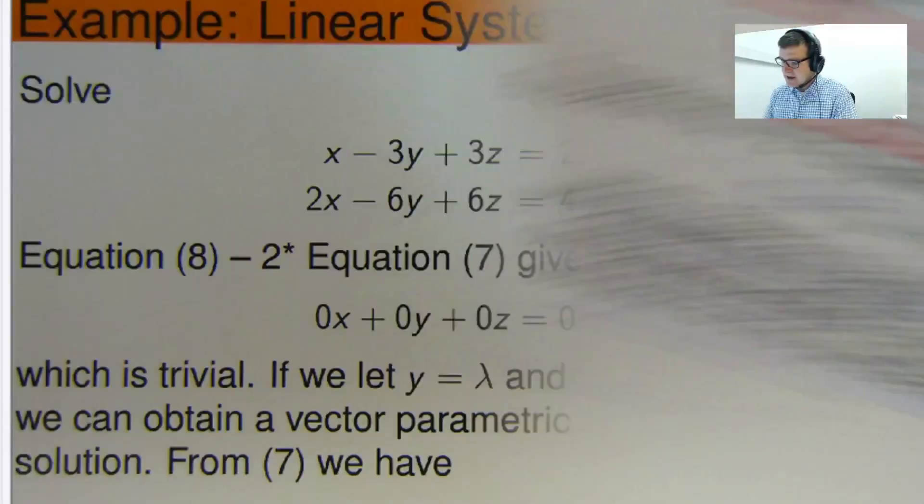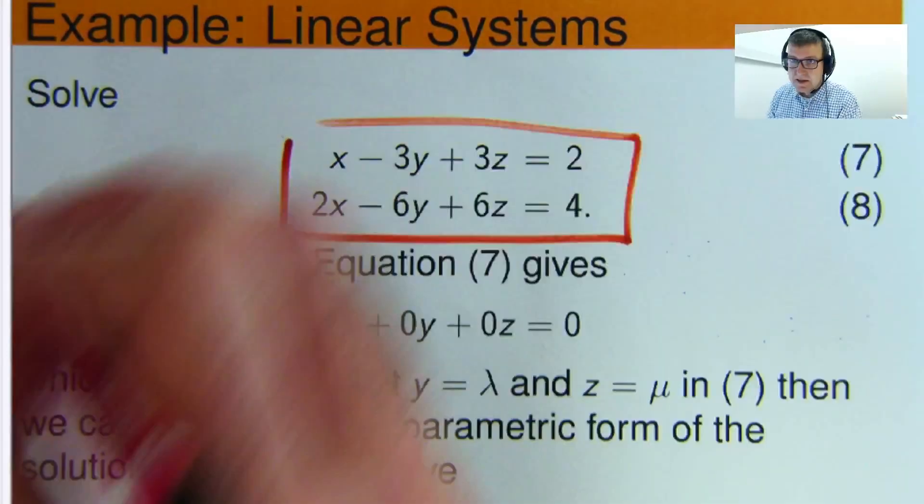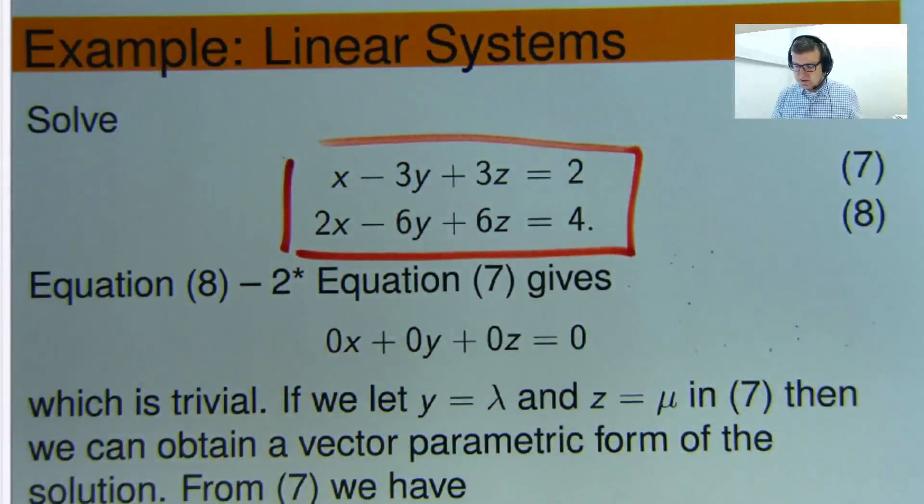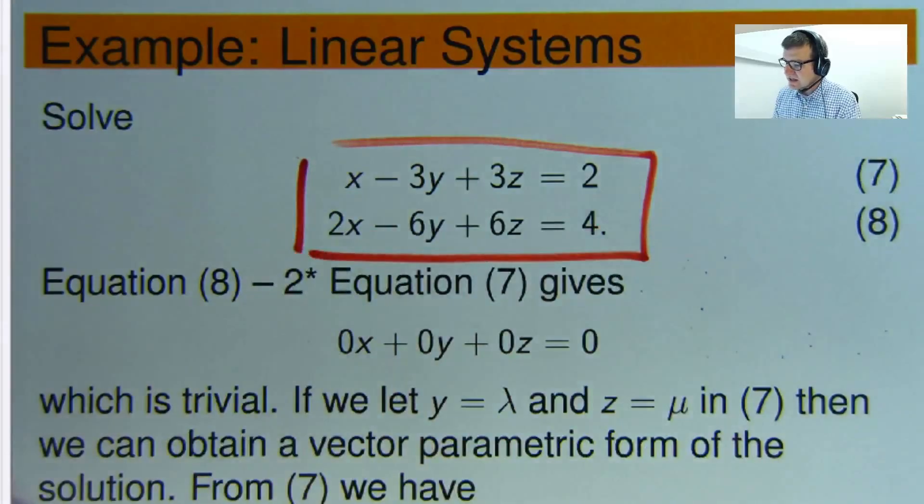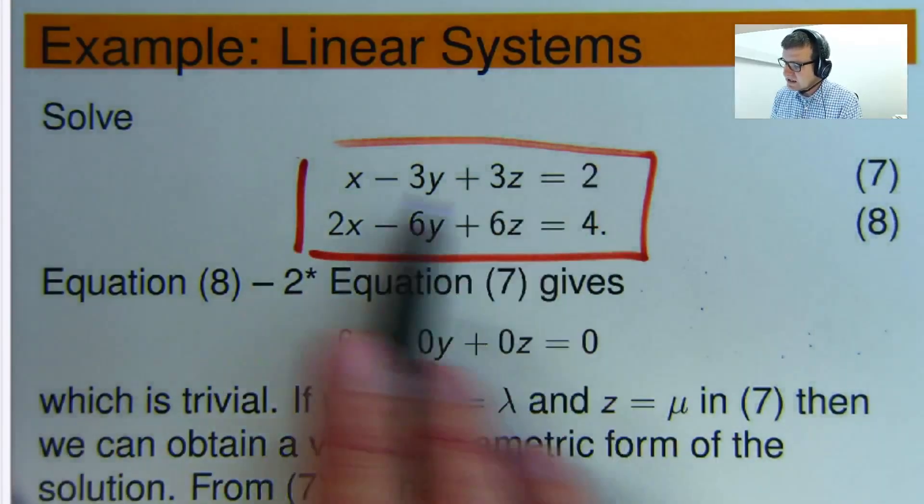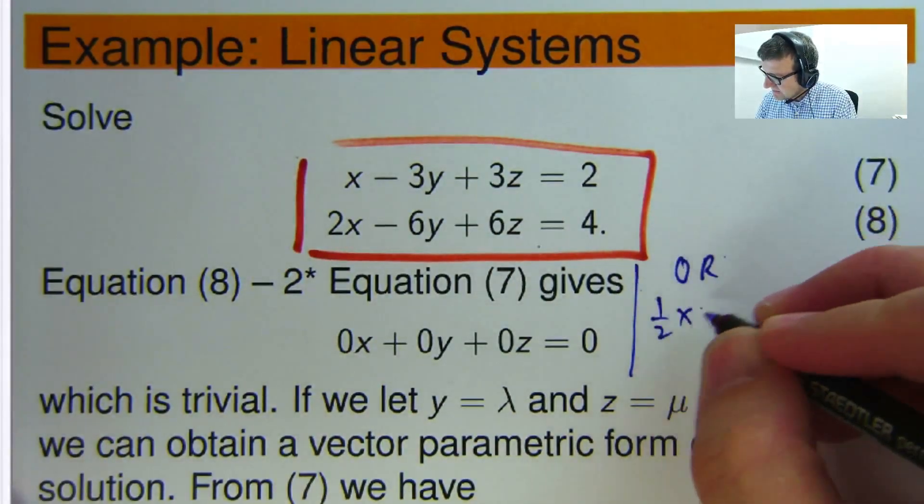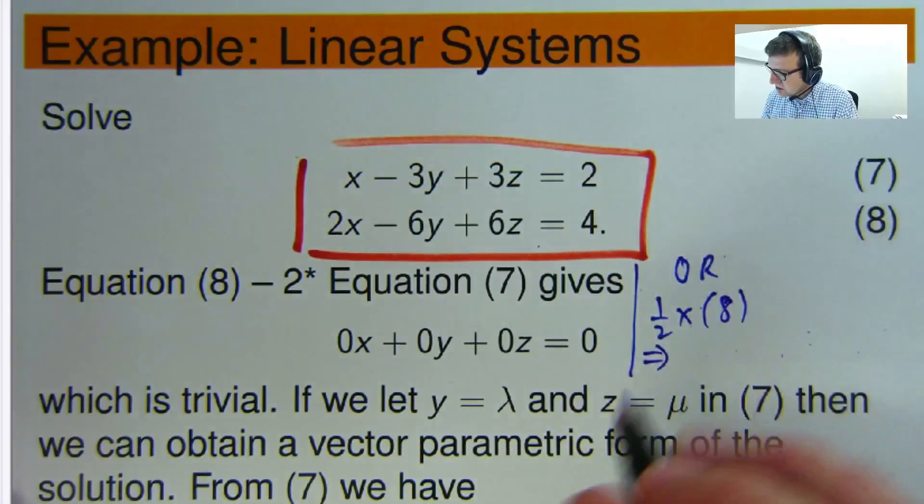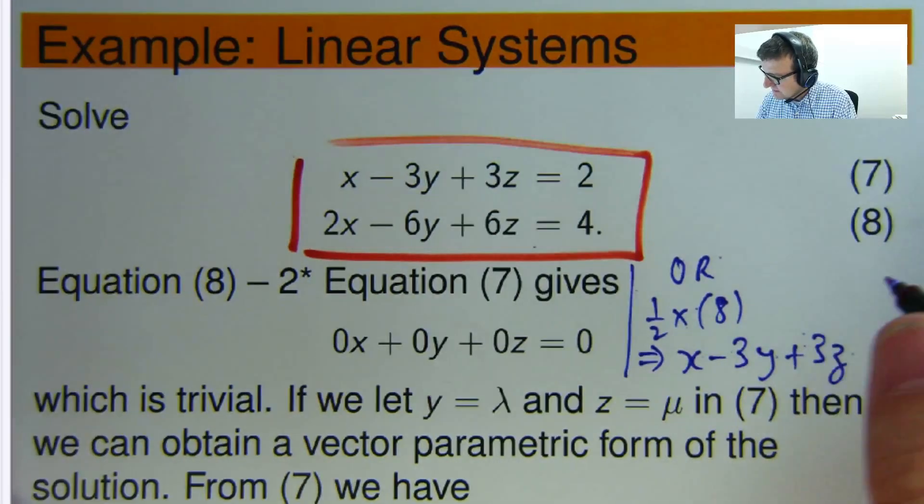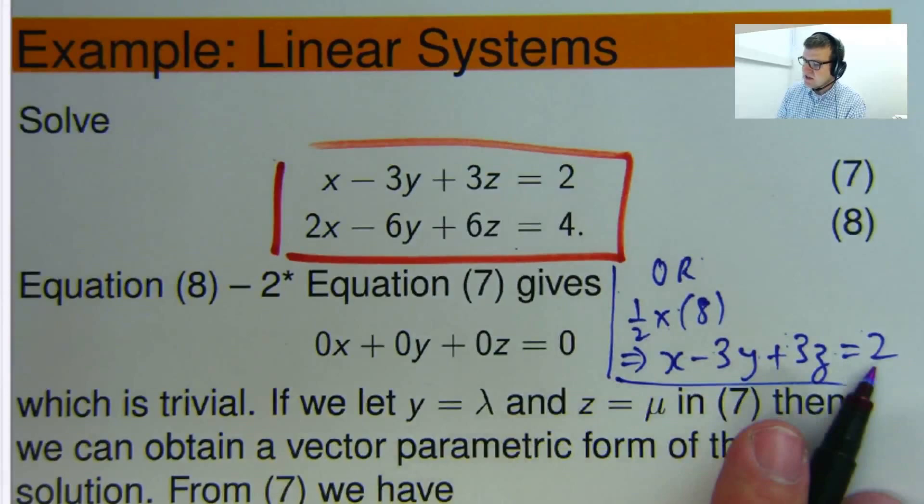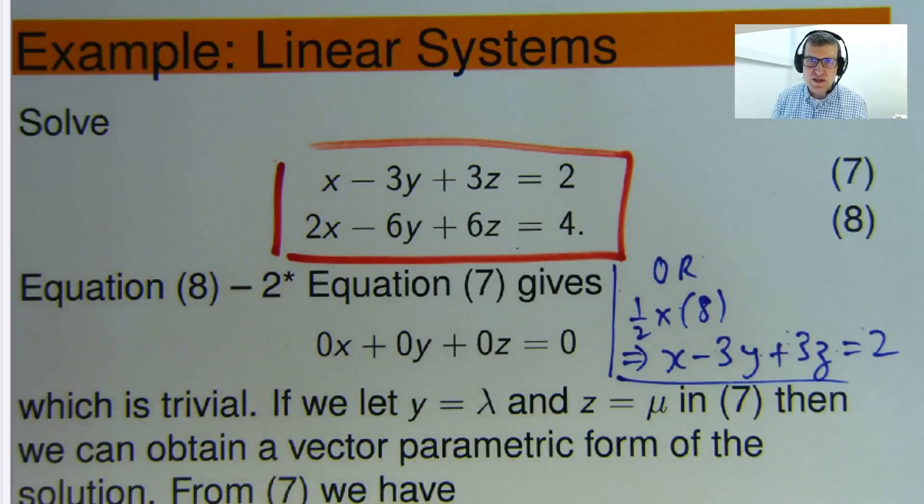What about the third case? Well, I'm glad you asked. Two equations, three unknowns. Here you can basically see that the second equation, equation eight, is twice times the first equation. Now, I've taken sort of two times equation seven away from equation eight, but you could just multiply equation eight by half, and you're led to this equation, which is the same as equation seven. So what does that tell you? It tells you that you've really only got one equation there.